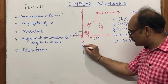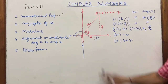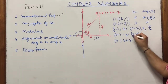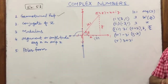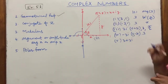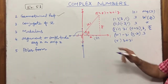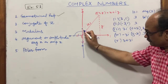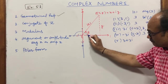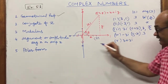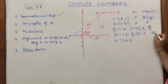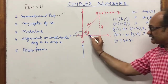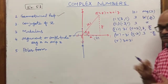For z = −3i (written as 0 − 3i), the modulus is again 3, and the argument is −π/2 since it lies on the negative imaginary axis (clockwise from the positive x-axis).